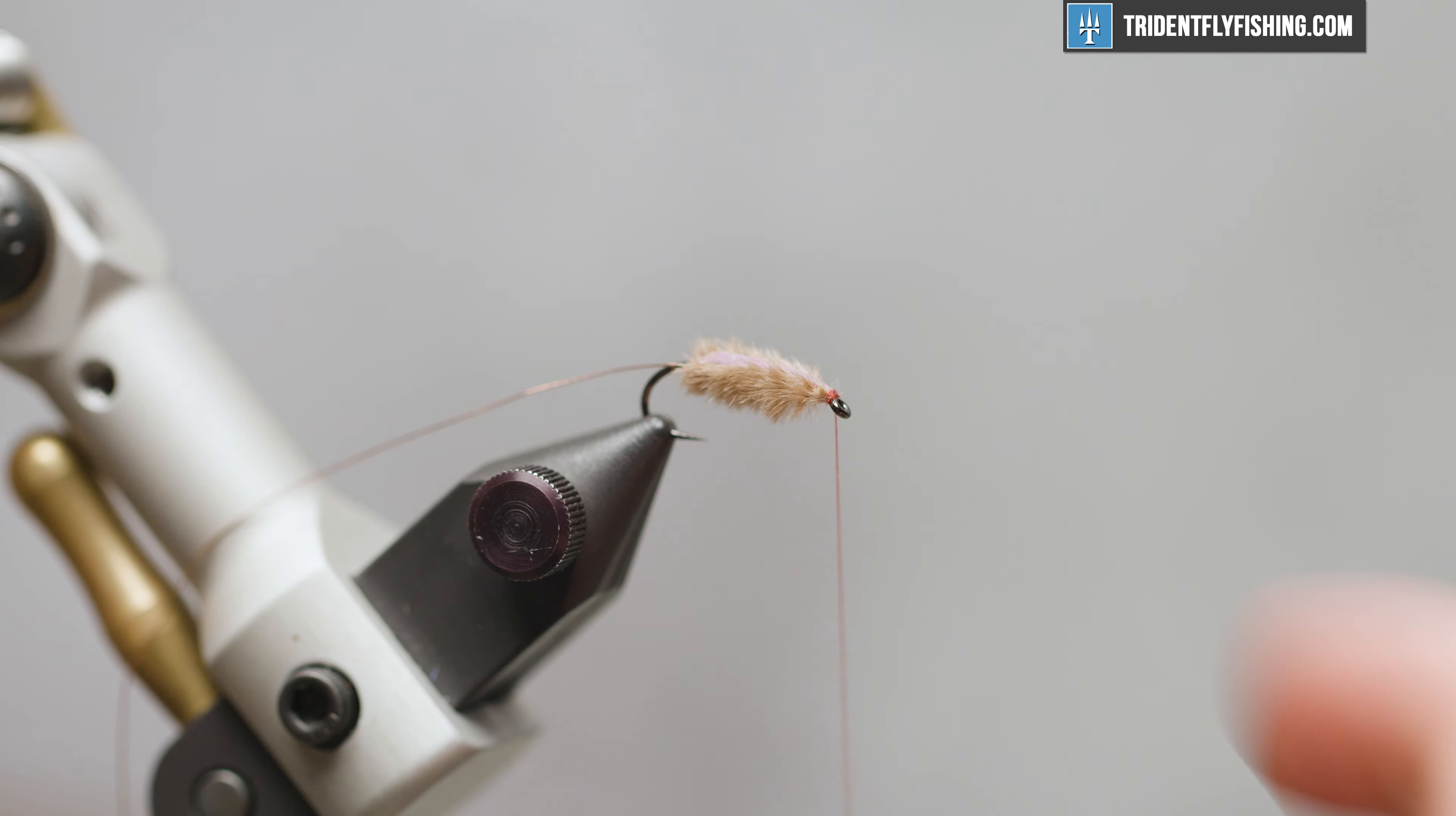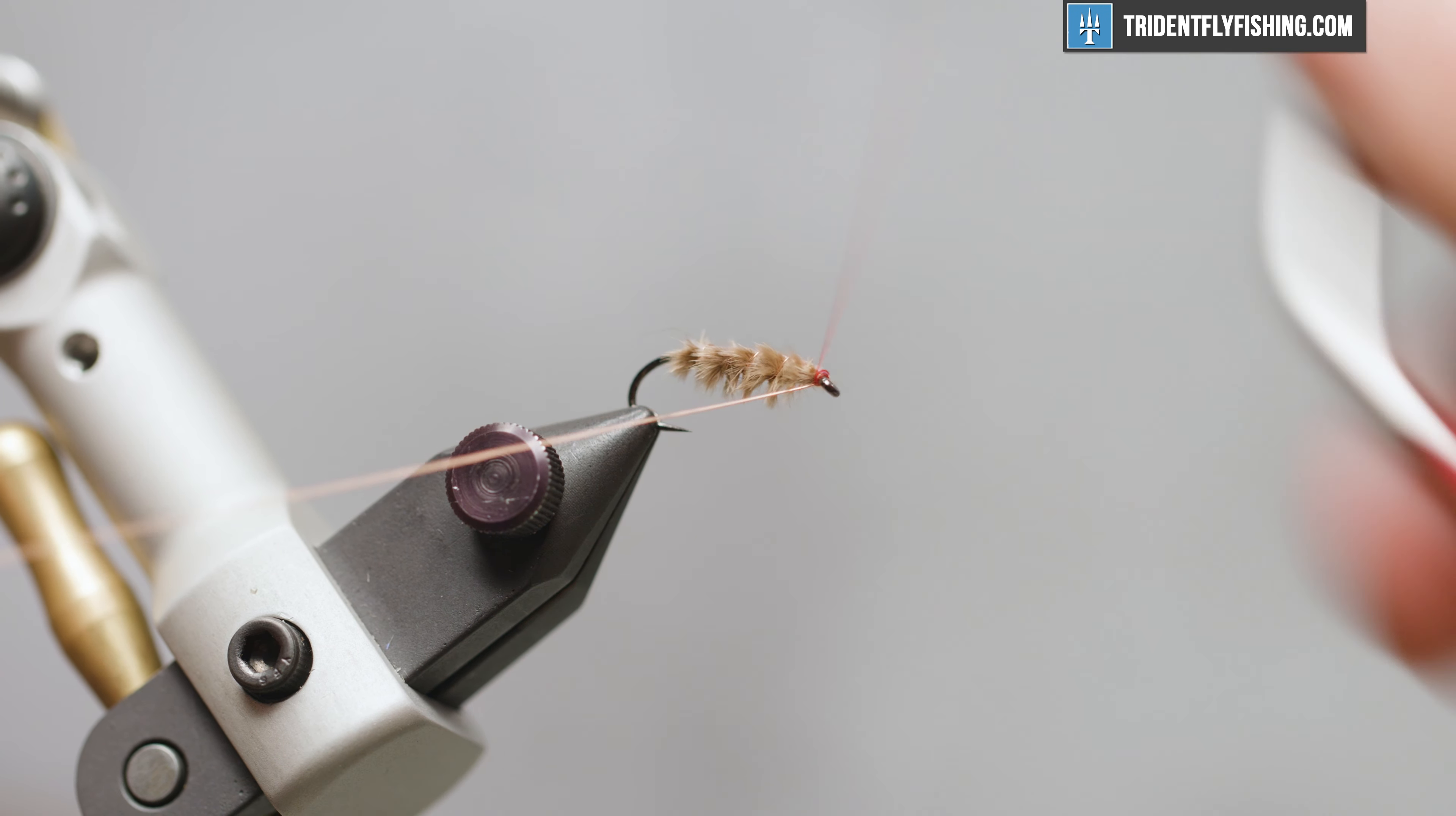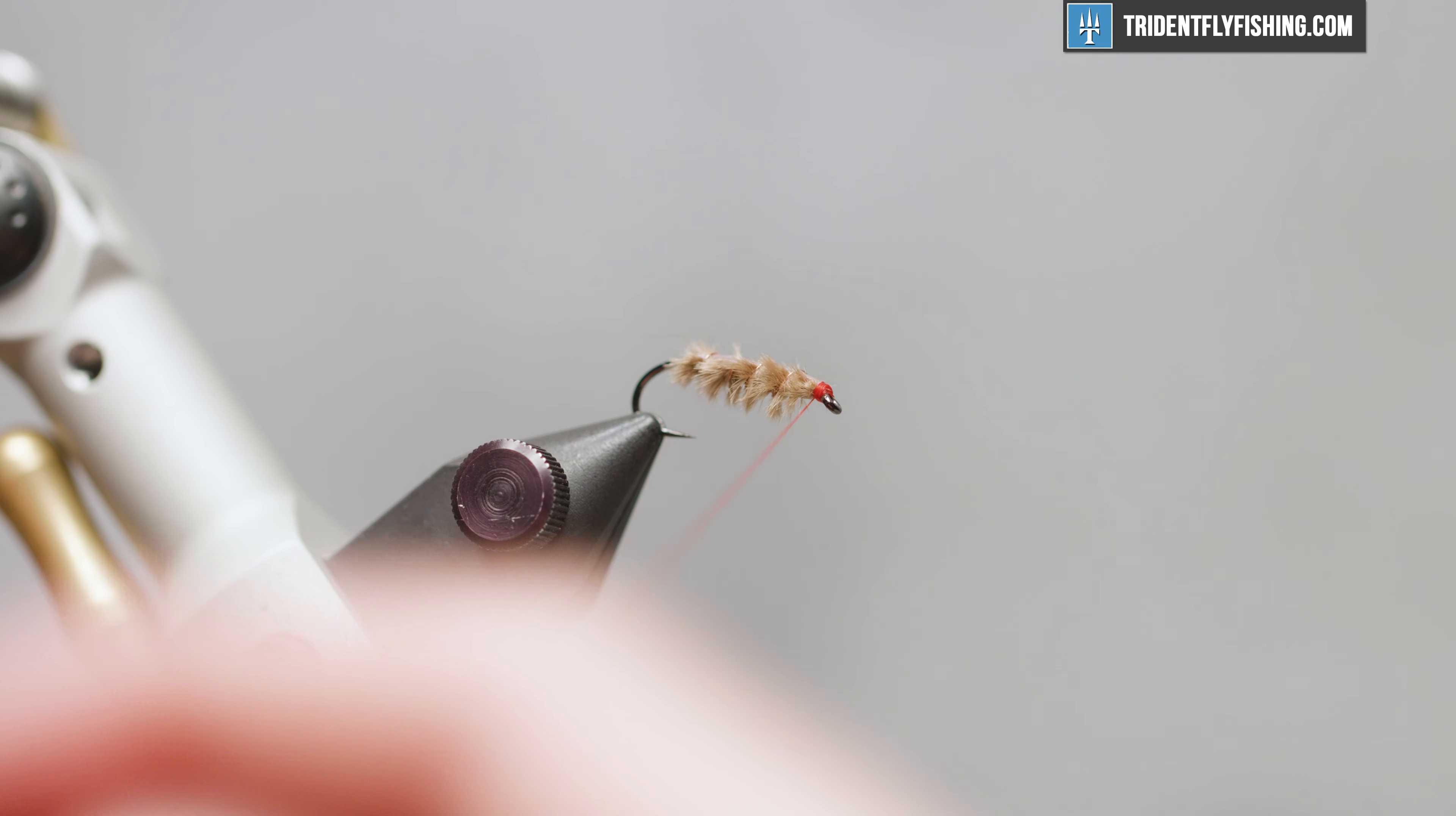Clip that, and now we're going to come in with our copper wire - some nice, evenly spaced wraps there. This provides both durability and segmentation. Segmentation's a crucial element to pretty much all of these crustaceans. Get that tied in, then save your scissors, pop it right off. You can create a nice little red head which I think is a nice attracting element, and hit with a half hitch and then whip finish.